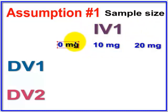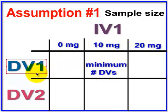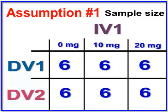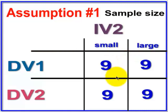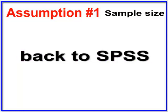We need a minimum of two subjects per cell — the minimum has to be the number of DVs. We have two DVs, so we need a minimum of two people per cell. In our study we have six rats in each group, so we did not violate the sample size assumption. For the smoothie size IV, we only have small and large. We also need a minimum of two per cell, and with this one we have nine per cell. So we're good to go — we did not violate the assumption of sample size.